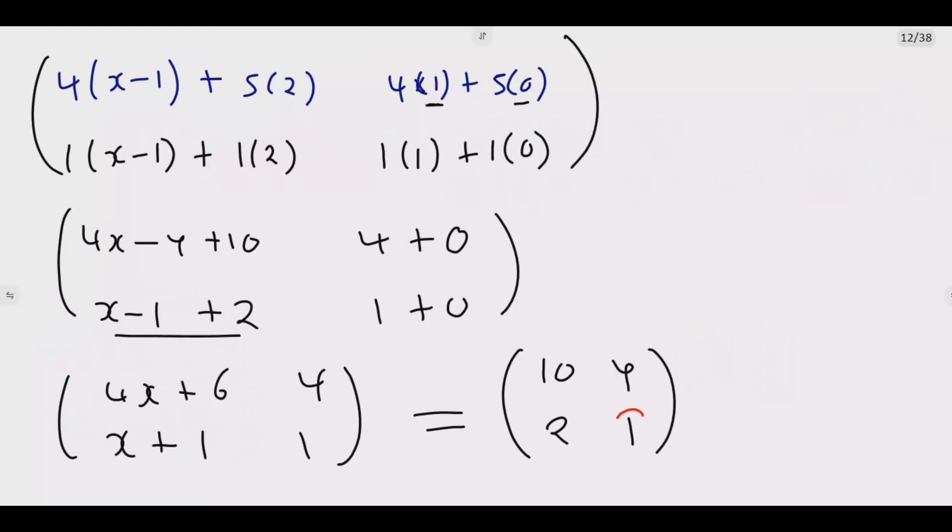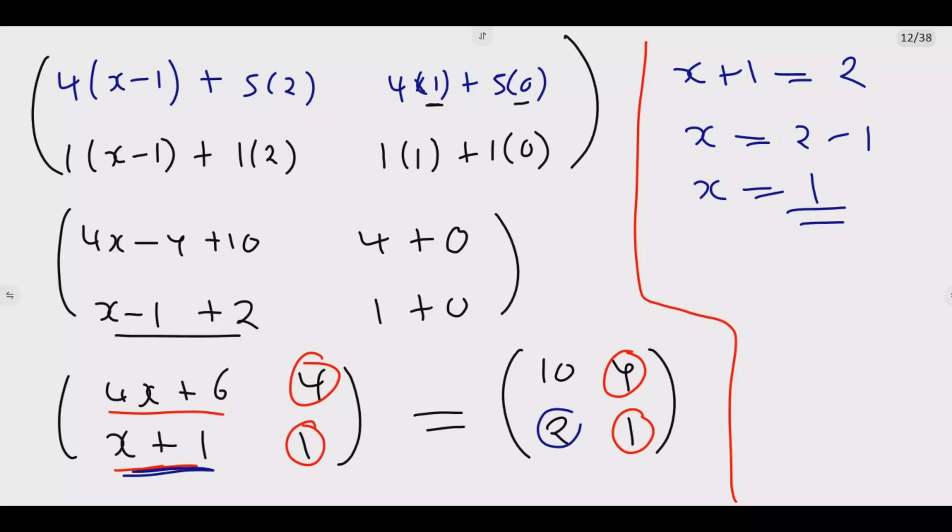This must be equated to 10, 4, 2, 1. You will notice that this one is this one. Between these two and this one, you can just pick one and equate it. If you don't have enough time, you just get this one: X plus 1 equals 2, so X is equal to 2 minus 1, which is X equals 1.